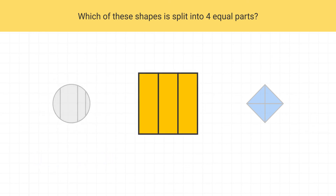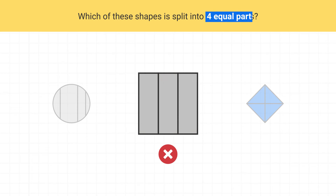Let's look at this next shape. How many parts is this shape split into? This shape is split into one, two, three parts. Which means it can't be our answer, because we were looking for a shape that was split into four parts, not three.